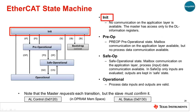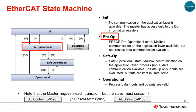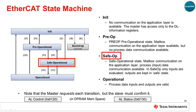In the init state, no communications on the application layer is possible, and only the master has access to the data link information registers. In the pre-op state, mailbox communication becomes possible, but there is still no process data exchanged to the master — this can be thought of as a machine setup state. In the safe-op state, communication to the application layer is available, but only inputs are evaluated; outputs are kept in a safe state. This correlates with the desire to know the state of a factory machine prior to exercising the outputs.